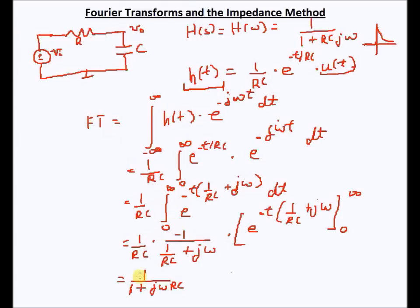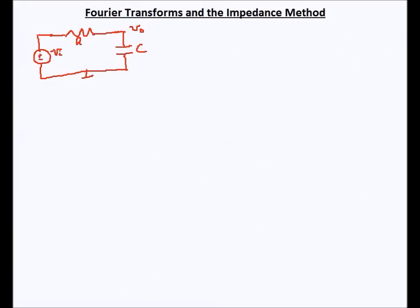You can see that the impedance method was actually derived from finding the Fourier transform. To understand how, recall that in 6WO2x we tried to find the sinusoidal response by solving the circuit's differential equation — using the guess-and-check method as well as the sneaky approach.